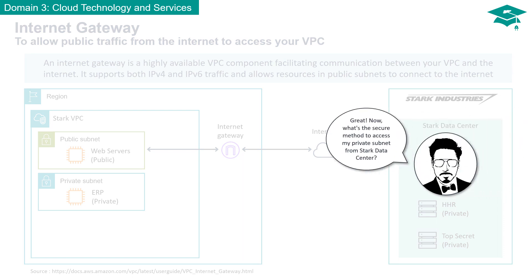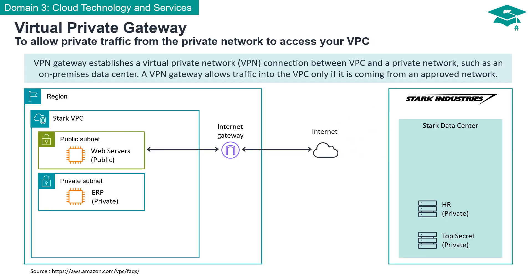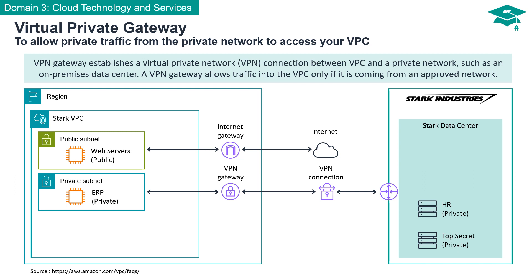What's the secure method to access my private subnet from the Stark Data Center? Virtual Private Gateway, commonly known as VPN Gateway, plays a crucial role in enabling private traffic from your on-premises data center or other approved networks to access resources within your Amazon Virtual Private Cloud. It establishes a secure virtual private network connection between your VPC and the external private network, ensuring that traffic can flow between them only if it originates from an authorized and trusted source.